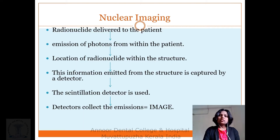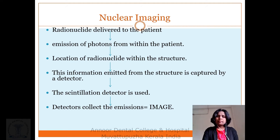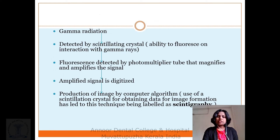In nuclear imaging, radionuclide is delivered to the patient. Emission of photons occurs from within the patient. The location of radionuclide within the structure is determined. Information emitted from the structure is captured by a detector — a scintillation detector. Gamma radiation is the radiation source and is detected by a scintillation crystal. Fluorescence is detected by the photomultiplier tube that magnifies and amplifies the signal, which is then digitized and processed to produce images by means of a computer.